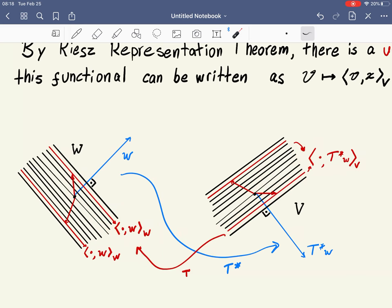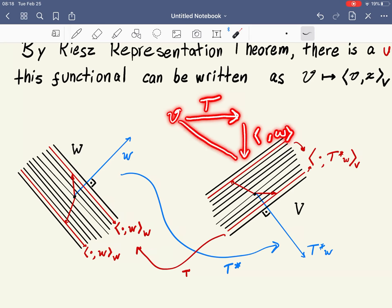We can do this with a diagram also if we want. We have some vector v, and we want to define a function of v on V. So first we can take T, then we can take inner product with w, and if we want to go directly, we would be taking inner product of v and some other vector. That other vector is what we call T star w.